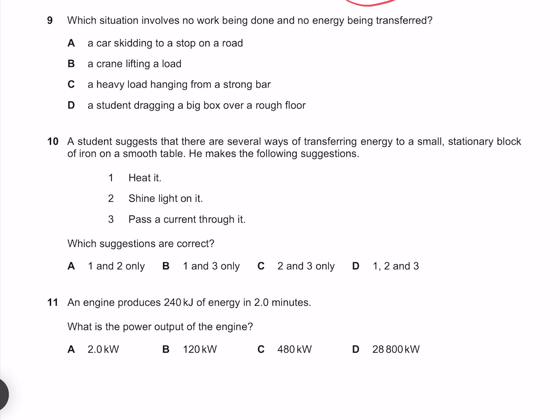Which situation involves no work being done and no energy being transferred? A car skidding to a stop on a road is going to be converting kinetic to heat and sound, so it can't be this one here. A crane lifting a load is likewise going to be transferring energy into gravitational potential, so it can't be this one here. A heavy load hanging from a strong bar doesn't imply any energy being transferred, so it could be this one here. A student dragging a big box over a rough floor is similar to our car skidding to a stop on a road, transferring kinetic energy into heat and sound, so it can't be this one. Therefore the answer must be C.